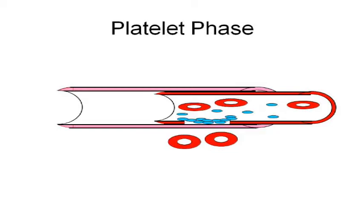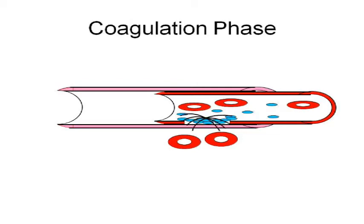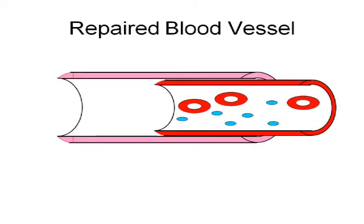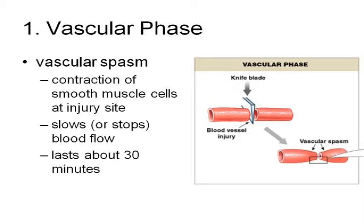Then the platelet phase, where the platelets begin to patch the hole — it's just a temporary patch. And then you have the coagulation phase where the fiber proteins settle down on the platelets; it's basically like stitches, giving the time for the blood vessel to heal itself. So in the vascular phase, you get what's called vascular spasm. The chemicals released from the damaged blood vessel wall stimulate those smooth muscles to constrict and contract.